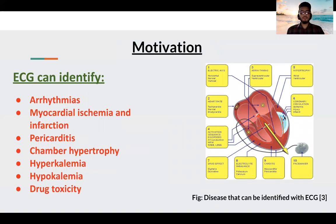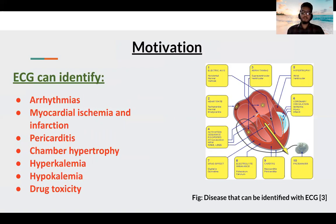Now the motivation — what drives us to work in this field. ECG can identify various kinds of diseases like arrhythmias, myocardial ischemia and infarction, pericarditis, chamber hypertrophy, hyperkalemia, drug toxicity, and more. You can also see on the right side other diseases identified by ECG, which shows the importance of ECG and its classification.